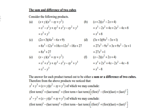The answer for each product turned out to be either a sum or a difference of two cubes. From the above products, we notice that x³ + y³ = (x + y)(x² - xy + y²). We may conclude that the first term cubed plus the last term cubed equals (first term + last term)(first term squared minus first times last term plus last term squared).